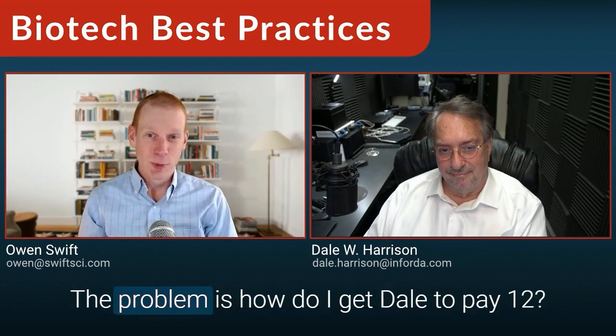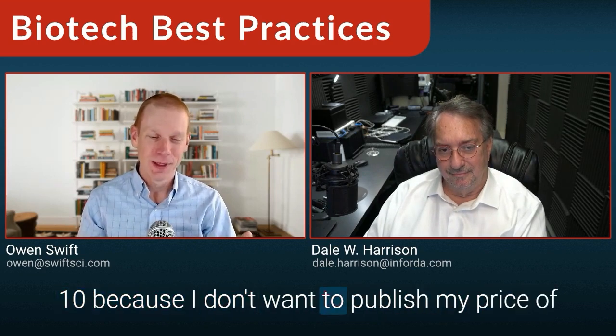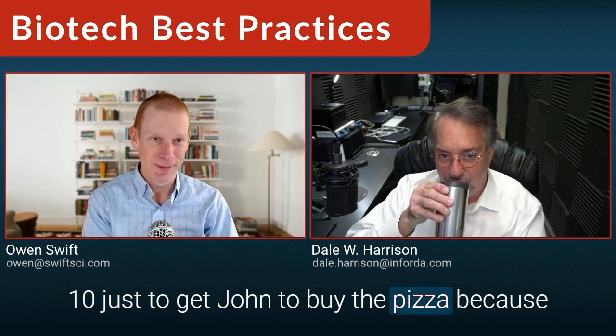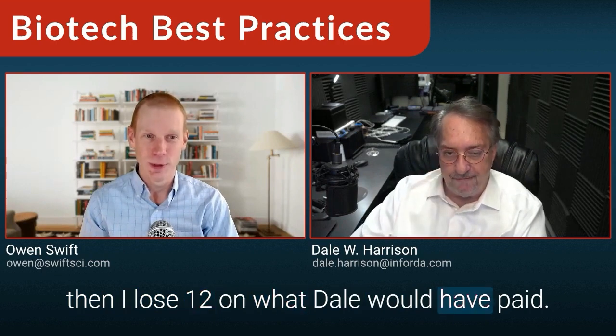Somebody else might say, 'John, would you like to buy a pizza for $12?' And John says, 'I can get a bucket of fried chicken for $12, so I'd rather have that.' Then I say to John, 'I'll sell it to you for $10.' And John says, 'That's actually a good deal because I'm saving money and I like pizza enough to take that deal.' The problem is how do I get Dale to pay $12 and John to pay $10? I don't want to publish a price of $10 just to get John to buy, because then I lose the $12 Dale would have paid.